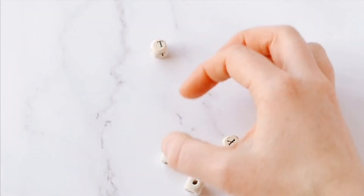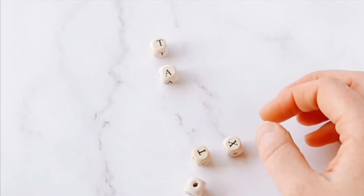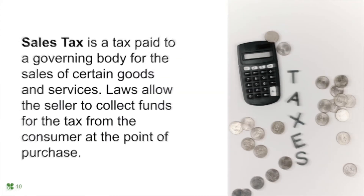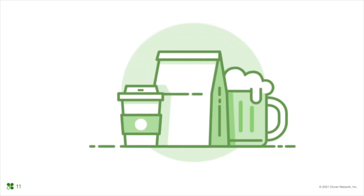Our second category is taxes. We're going to be talking a little bit more about sales tax. Sales tax is a tax paid to a governing body for the sales of certain goods and services. Laws allow the seller to collect funds for the tax from the consumer at the point of purchase. Depending on business vertical, you may see additional taxes like drink and food tax.